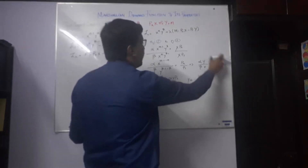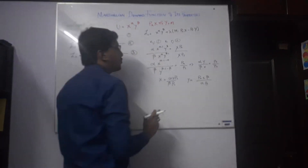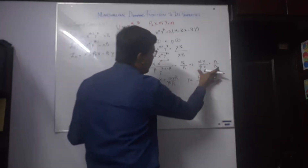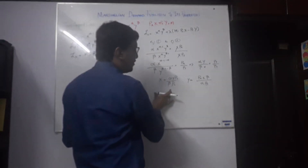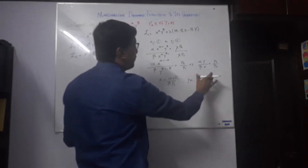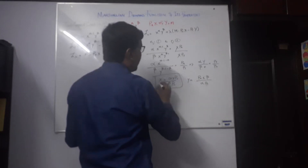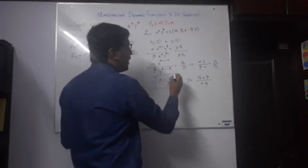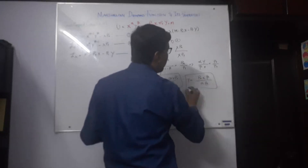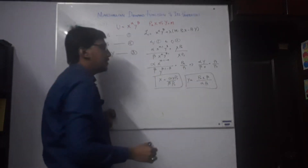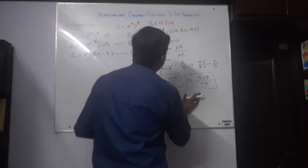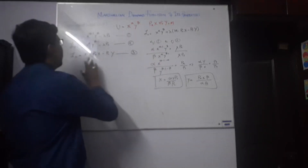Moving terms from denominator to numerator and vice versa, we get: alpha Y over beta X equals Px over Py. Using simple algebraic methods, we solve for X to get X equals alpha Y Py over beta Px, and Y equals Px X beta divided by alpha Py.